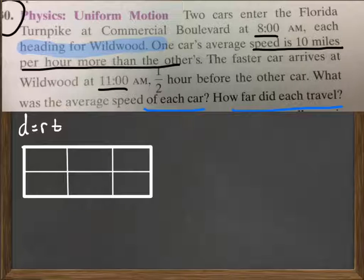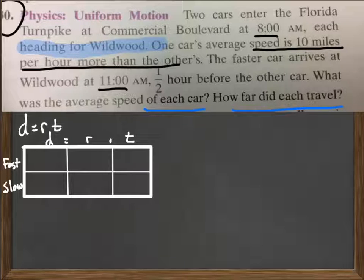And so doing a little bit of labeling on our chart here, we have a faster car and a slower car. So read the problem here. Two cars enter the Florida Turnpike at Commercial Boulevard at 8 a.m., each heading for Wildwood, which is some amusement park I'm assuming. One car's average speed is 10 miles per hour more than the other. The faster car gets there at 11 a.m., one half hour before the other car. What's the average speed of each car? How far did each travel?